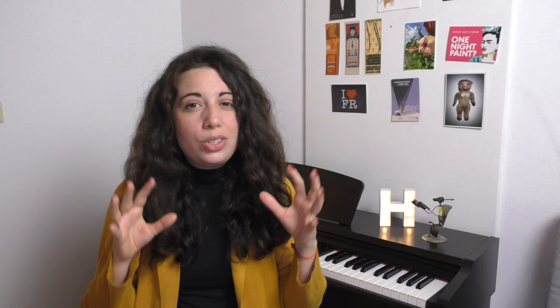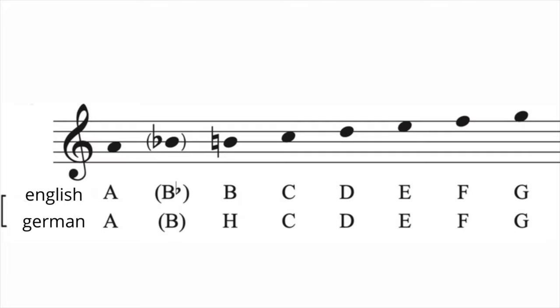The most common way of hiding these messages was through what's called a musical cryptogram. That means they would take the letters assigned to musical notes and use that to write words when composing melodies or themes.